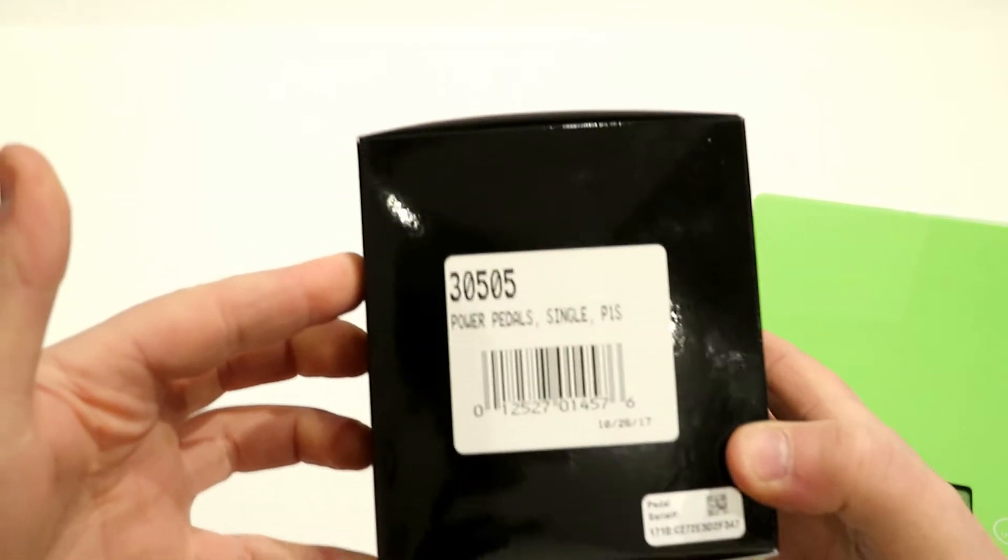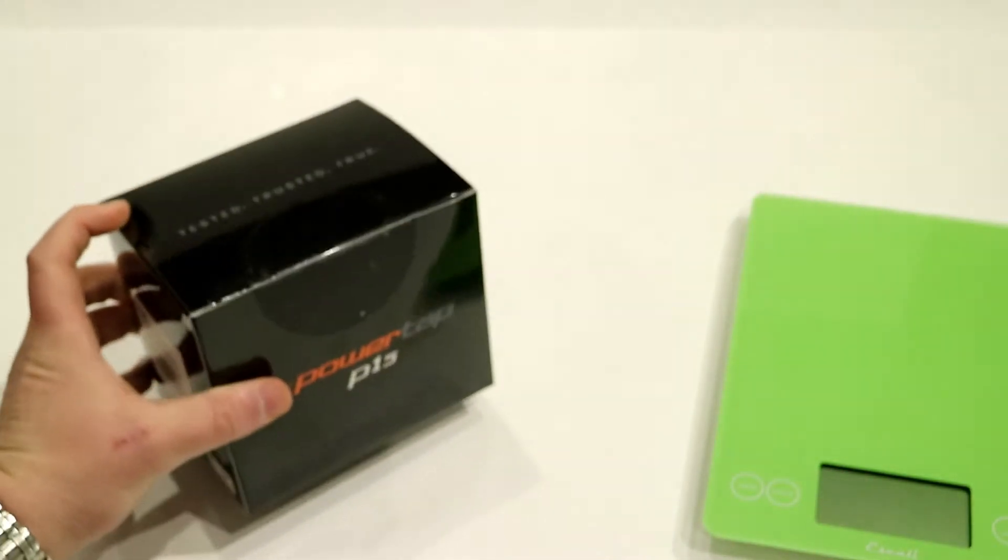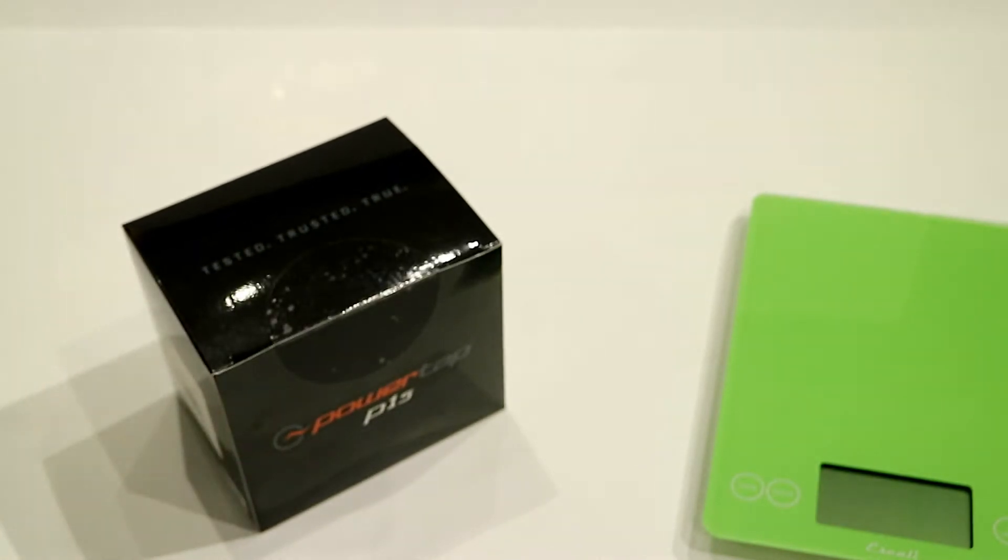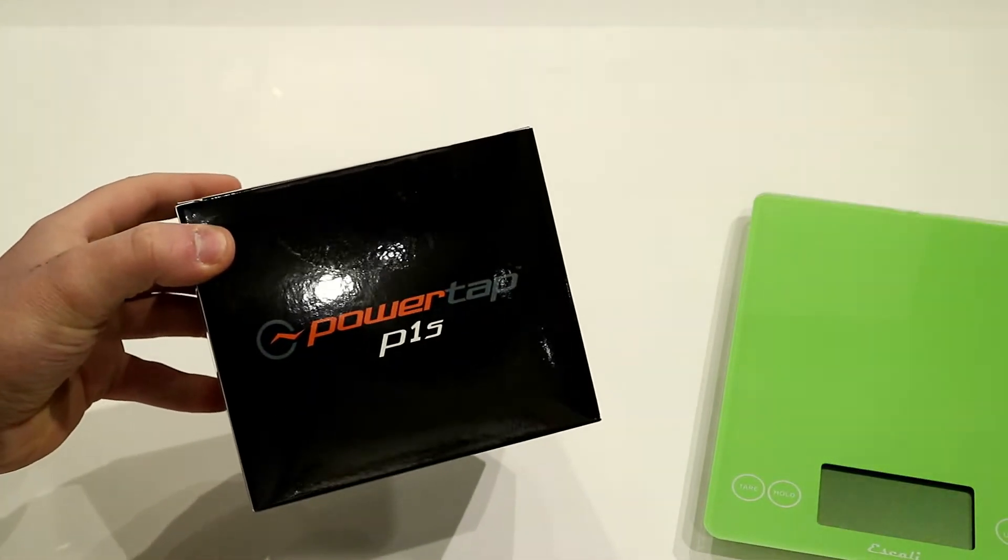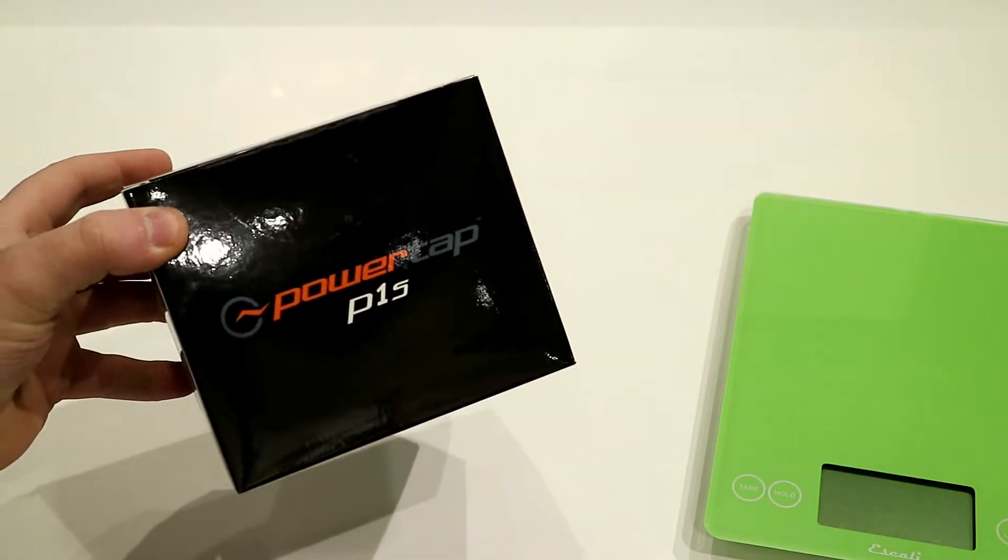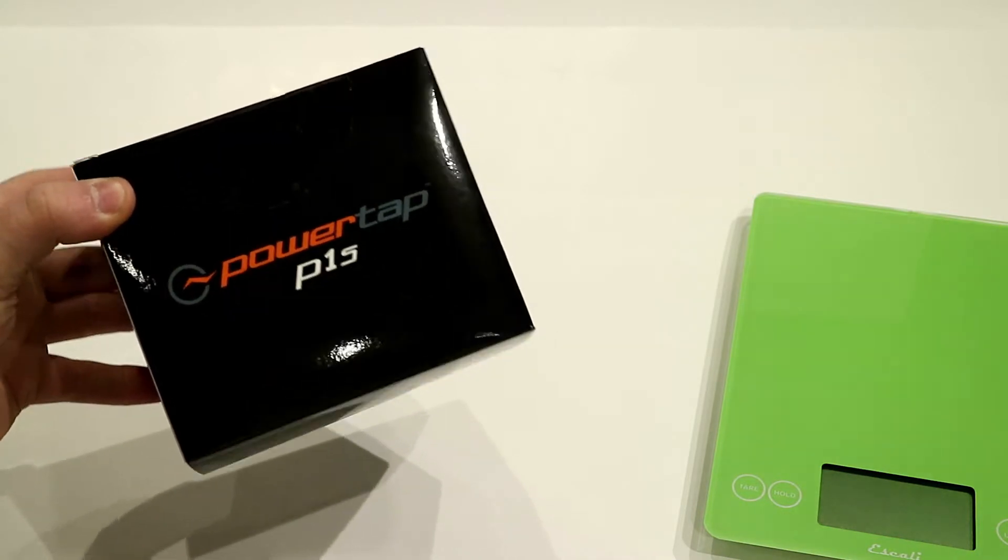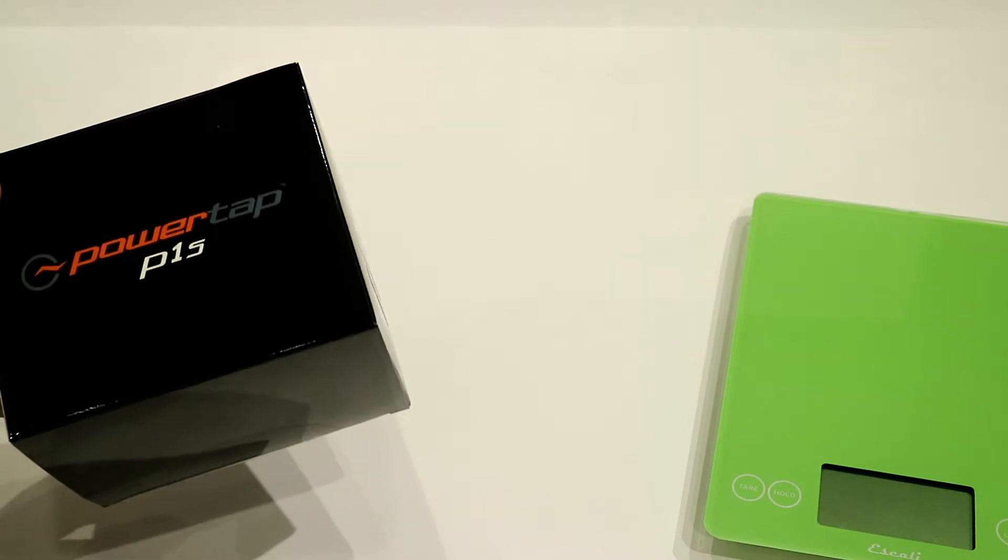This is a single-sided power pedal that will mount right up to your bicycle. The neat thing with these is that they actually don't need to be calibrated. They can be moved from bike to bike and you're not stuck with just one power meter on one bike. So if you have multiples you can actually use it on all different types of bikes.